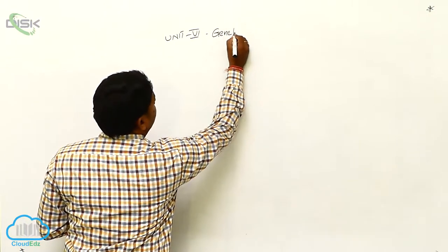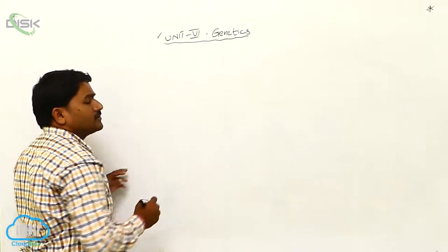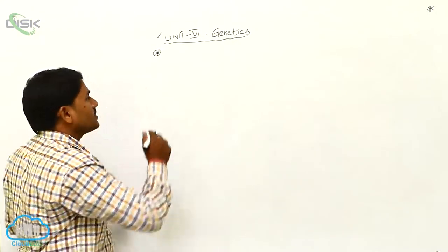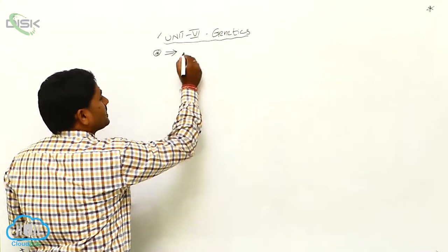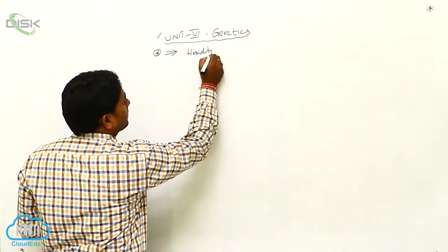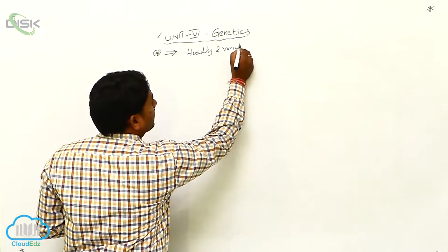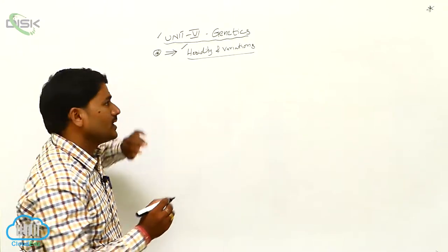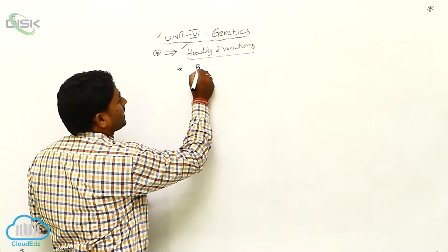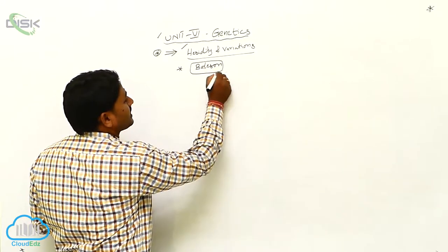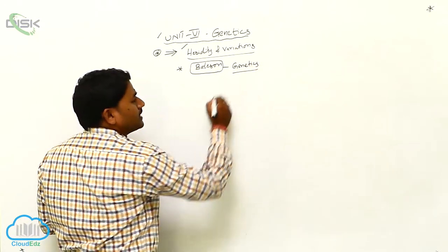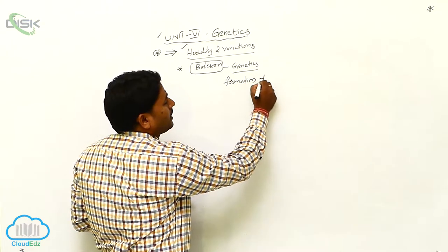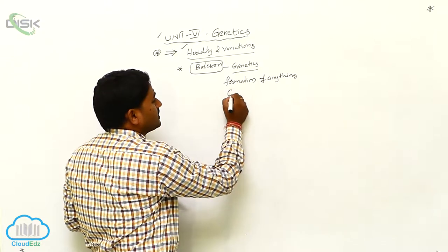Unit number 6, the chapter is Genetics. What is the meaning of genetics? Genetics is a discipline of science that deals with the study of heredity and variations. It is the branch of biology that deals with heredity and variations. The word genetics was coined by the scientist Bateson. In the Greek language, the meaning of genetics is 'formation of anything,' also known as Genesis.